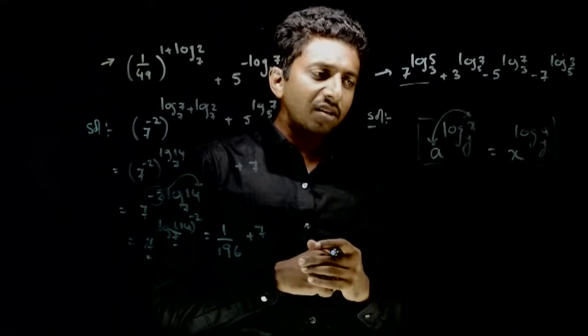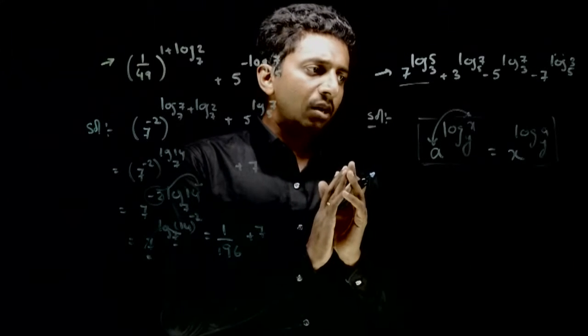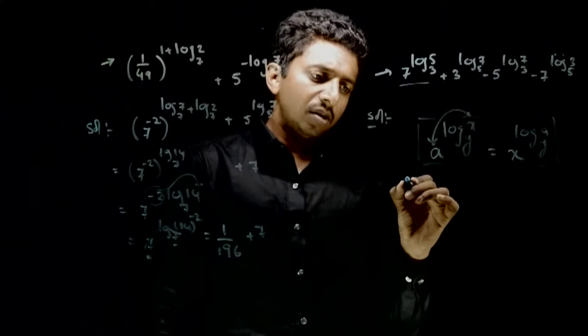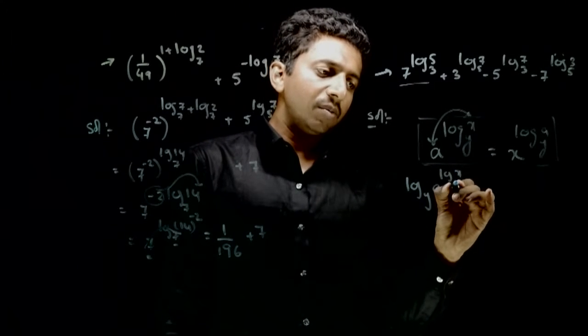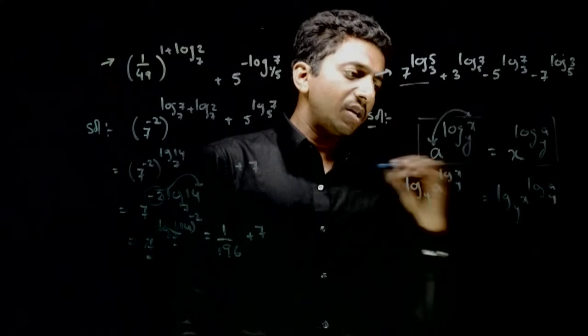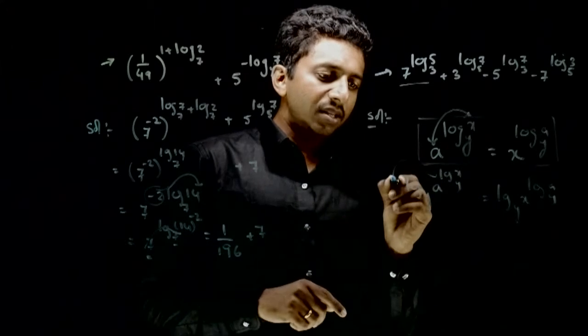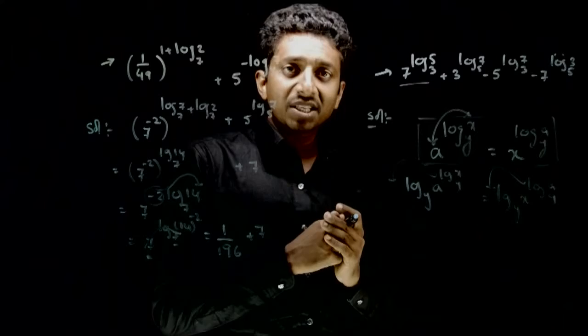This is a proof, proof is very easy. Aakko proof chahiya toh just apply log to the base y on both sides. Log to the base y apply ka toh a power log x to the base y is equal to log to the base y of x power log a to the base y. Now just bring this outside. Power me jo hai ho bahar a jae ga.